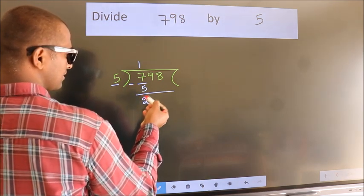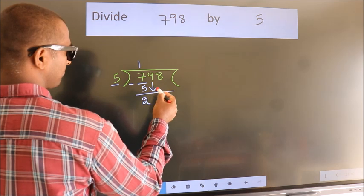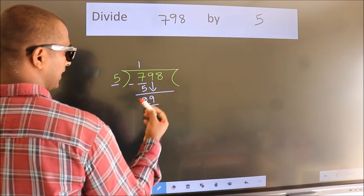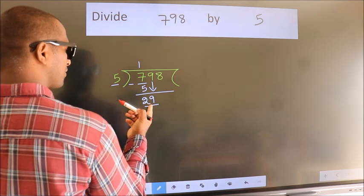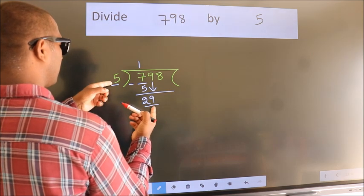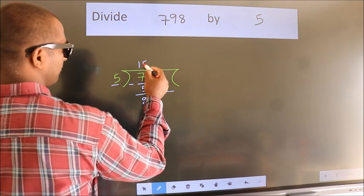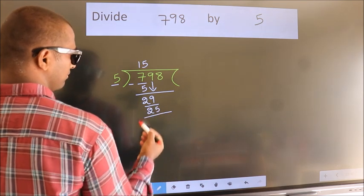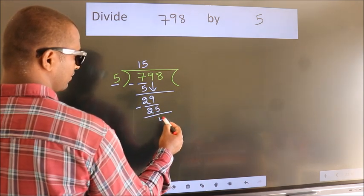After this, bring down the beside number. So 9 down, making 29. A number close to 29 in the 5 table is 5 fives, which is 25. Now we subtract and get 4.